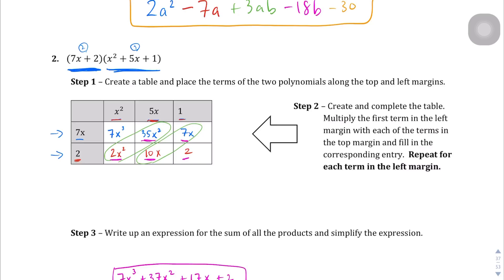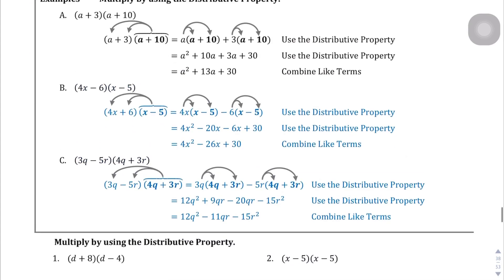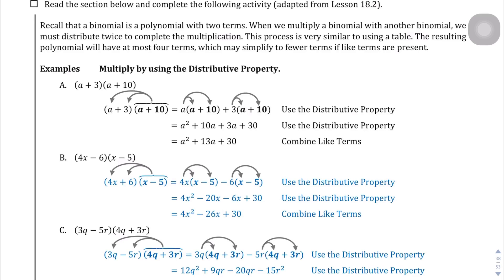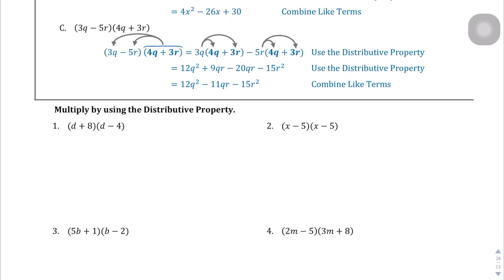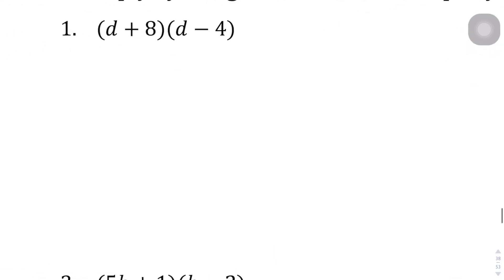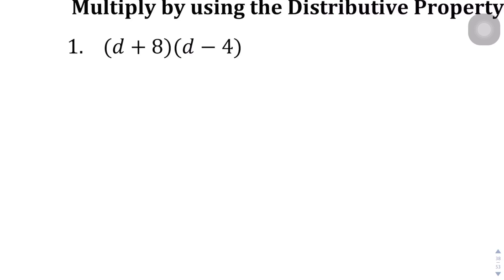Let's do a couple more examples on the next few pages — page 38. Here they want you to use the distributive property, also known as the FOIL method. I don't really like the FOIL method just because there are so many arrows, and that many moving parts tends to lead to more mistakes — so many things to keep track of. If you like the FOIL method, feel free to use it, but I'm going to keep drawing tables here.